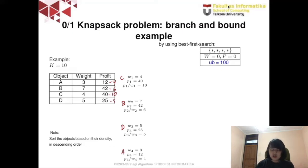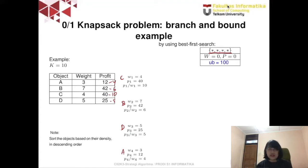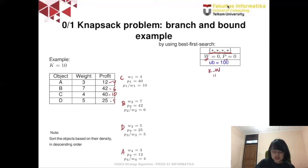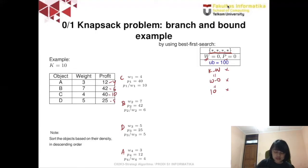We start with the initial node where we haven't decided anything yet — no objects have been chosen. The total weight so far is 0 and the total profit so far is also 0. The upper bound is computed as the remaining capacity (k minus W = 10 minus 0 = 10), multiplied by the density of the next item, which is C with density 10. So the upper bound is 10 times 10 equals 100.